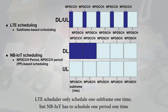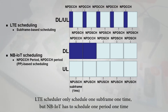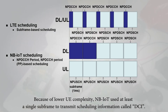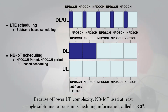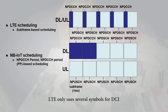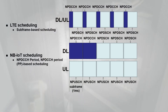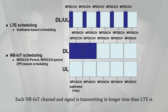Scheduling is one of the key differences between NB-IoT and LTE. The main concept is to provide larger coverage and lower UE complexity. The LTE scheduler schedules one subframe at a time, but NB-IoT schedules one period at a time due to lower UE complexity. NB-IoT uses at least a single subframe to transmit scheduling information called DCI, whereas LTE only uses several symbols for DCI. Each NB-IoT channel and signal is transmitted over a longer time than in LTE.